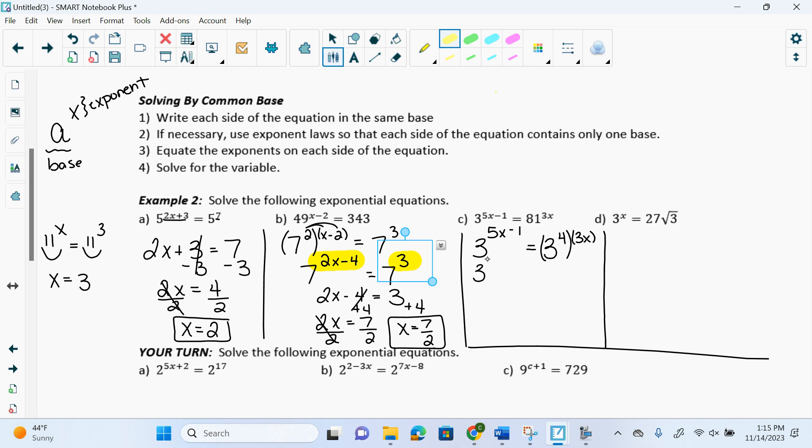All right. So we have 3 to the 5x minus 1 equals 3 to the 4. You aren't sneaky. I'm done.